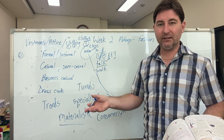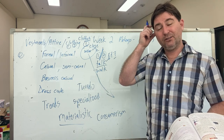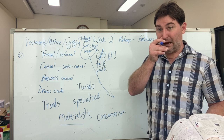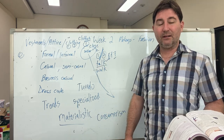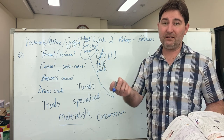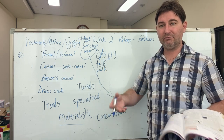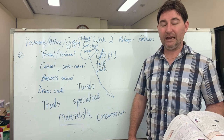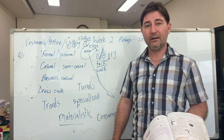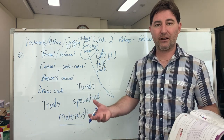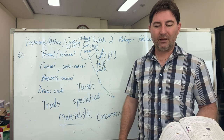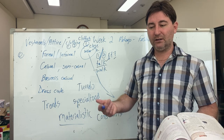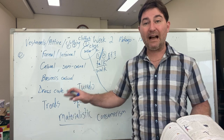With seven to eight billion people on Earth, if each of us buys 100 articles of clothing a year, the math gives us 700 to 800 billion articles of clothing — each one having an impact on the environment. Even if we just consider three billion people consuming a certain number of clothes every year, the amount is massive in terms of pollution, water consumed, and energy consumed.